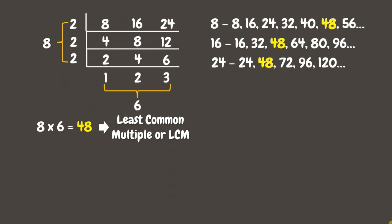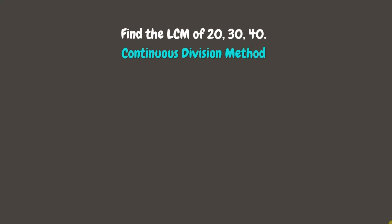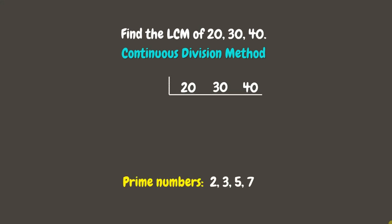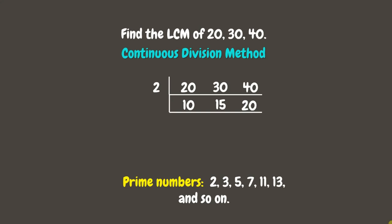Let's have another example. Let us find the LCM of 20, 30, and 40. Again, we will use the continuous division method. For our first step, let us list down the numbers horizontally. Same as finding the greatest common factor, let's divide them by prime numbers if possible. Let us start by dividing by the smallest prime number, which is 2. 20 divided by 2 is 10, 30 divided by 2 is 15, while 40 divided by 2 is 20. You can see that their last digits are either 0 or 5. According to the divisibility rule, they are divisible by prime number 5. Now let's divide: 10 divided by 5 is 2, 15 divided by 5 is 3, while 20 divided by 5 is 4.